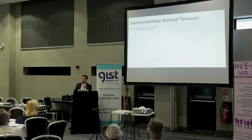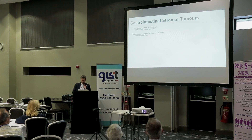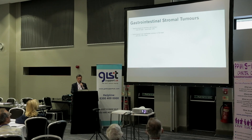Gastrointestinal stromal tumours we think come from the cells of Cajal — the pacemaker cells that drive peristalsis in the gut. They're the commonest non-epithelial tumour in the GI tract. Most cancers you hear of are adenocarcinomas; the next most common will actually be a GIST. Most of them are driven by a particular mutation: a tyrosine kinase called C-kit.